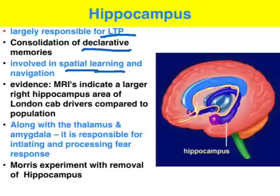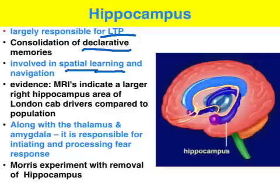Evidence of this comes from MRI studies conducted on experienced London cab drivers, who are highly skilled at spatial navigation — learning the best route from point A to point B and working out shortcuts. These MRIs show that these people have a larger right hippocampus area compared to the general population.